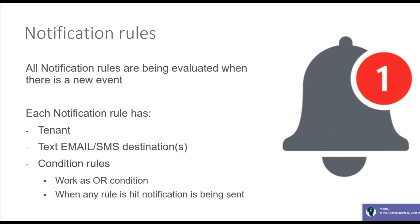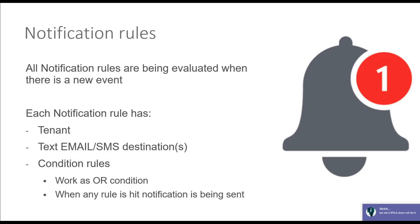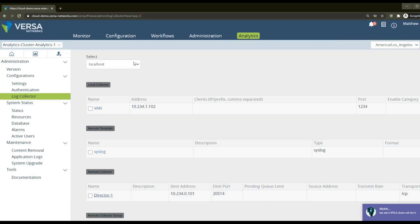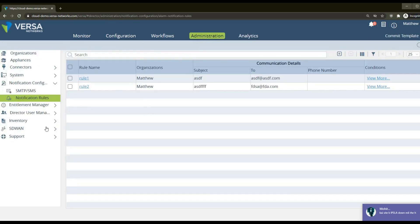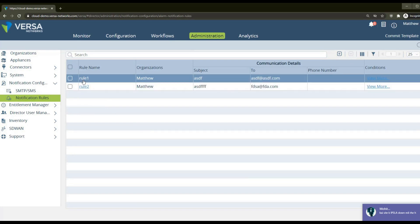In more detail about notification rules: all notification rules are evaluated when there is a new event. This means the system will not stop evaluating notification rules when it makes a hit with one of the rules. Each notification rule consists of the tenant for which it was created, the destination to which it should be sent, and multiple condition rules. In the director screen, go to administration, notification configuration, and notification rules — both rules will be checked.